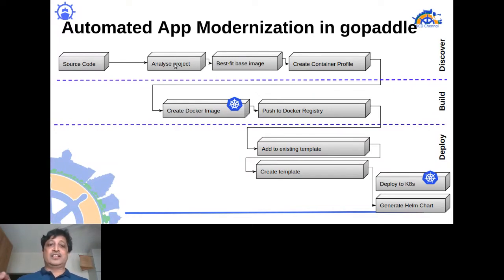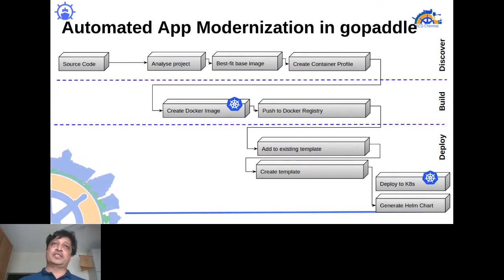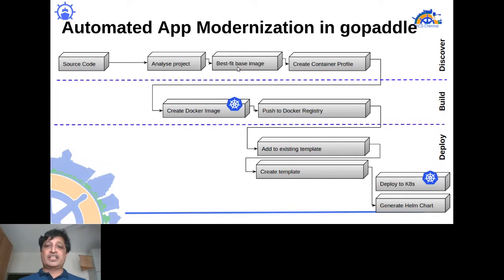You start from the source code. GoPaddle goes and analyzes the project to understand what language it is, then performs a discovery to find out the base operating system — for instance Ubuntu — and based on analysis determines it's a Node.js project, picks the appropriate Node.js image, and finds the best-fit image.